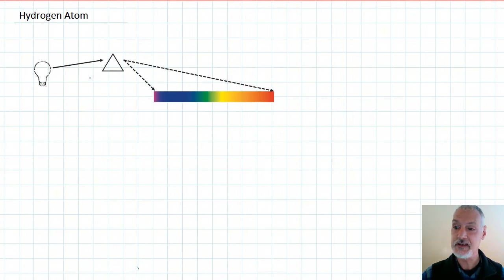Here I have an example of what's called a continuous spectrum. White light produced from a light bulb goes through our glass prism and splits into its component colors starting at this end with violet and moving up to this end which is red.